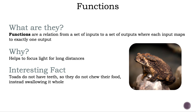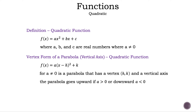Now, let's take a look at the forms we're going to discuss in today's video. First, we have the standard form, where we have f of x is equal to ax squared plus bx plus c, where a, b, and c are real numbers, where a cannot equal 0.